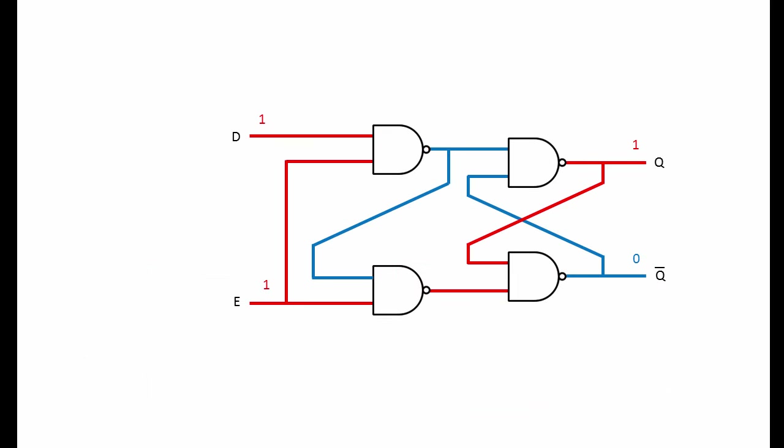Here's our D-Latch again. When we install our edge detection device at E, we can rename the enabling input to C — C for clock. Our D-Latch has been changed from a level-triggered device into an edge-triggered device. Some people would now call this a flip-flop, and by many definitions they'd be correct — a flip-flop being a clock-edge-triggered bistable which can be in one state or another. Purists, however, would argue that this is actually a pulse latch, but it does now behave something like a flip-flop, albeit with some limitations. I'll talk about true flip-flops in a later video.